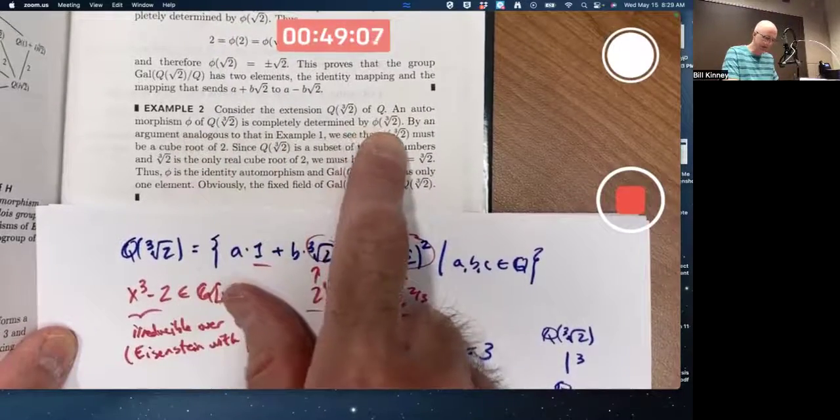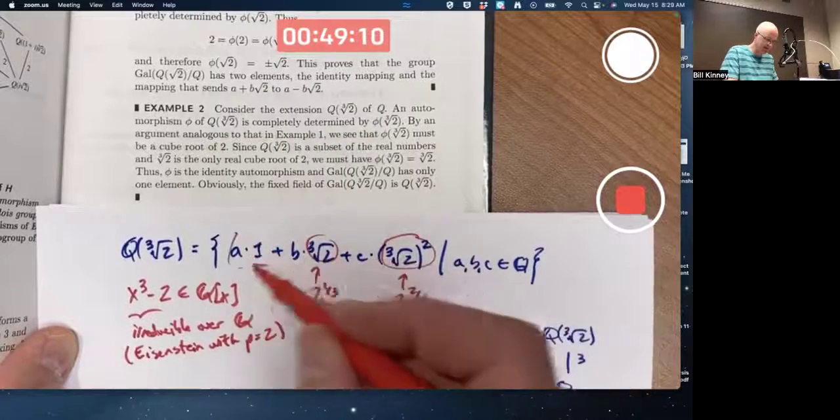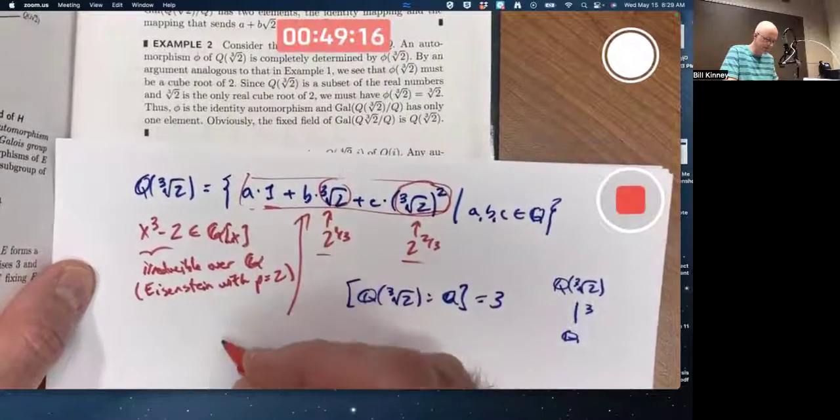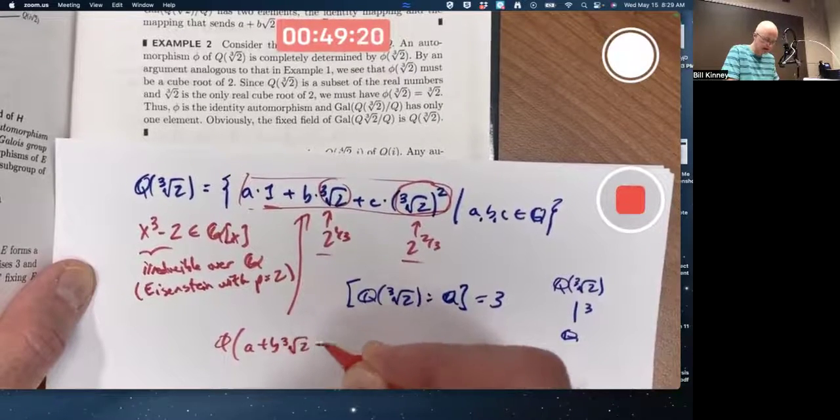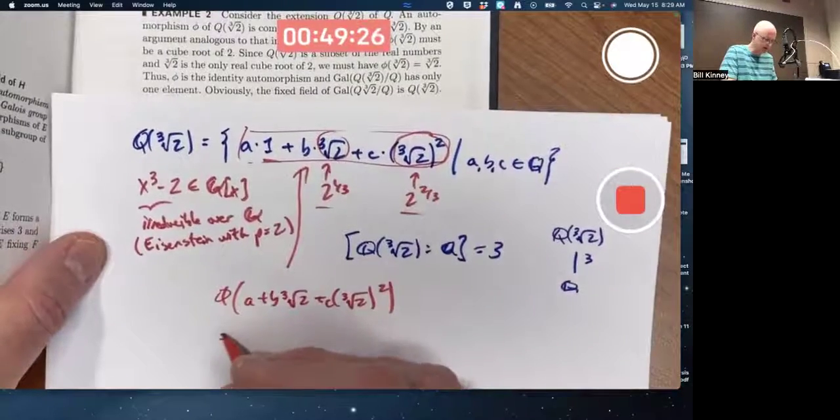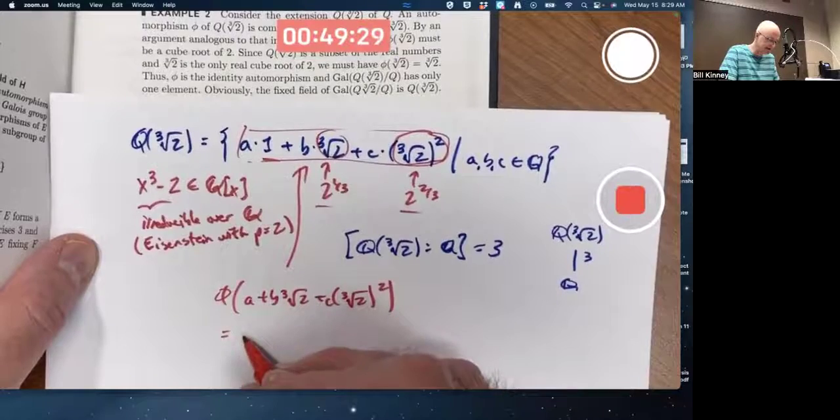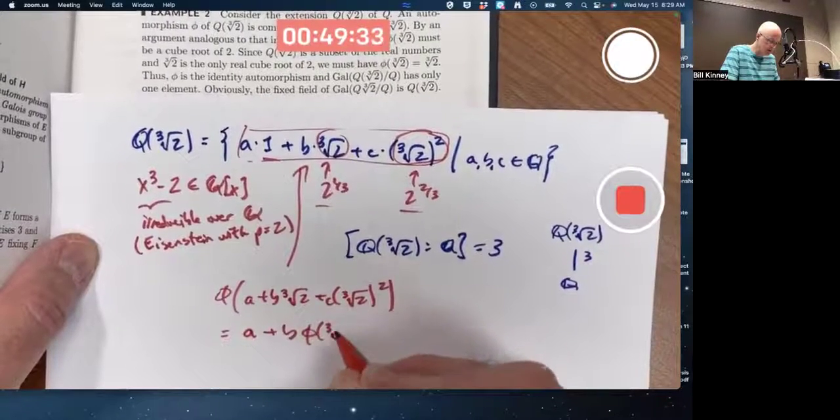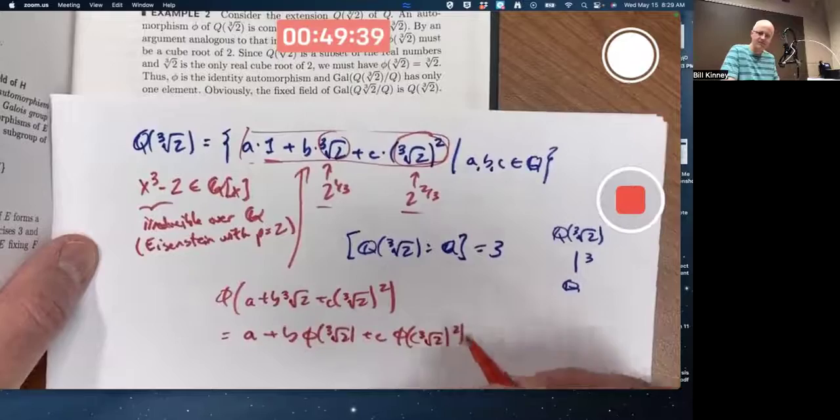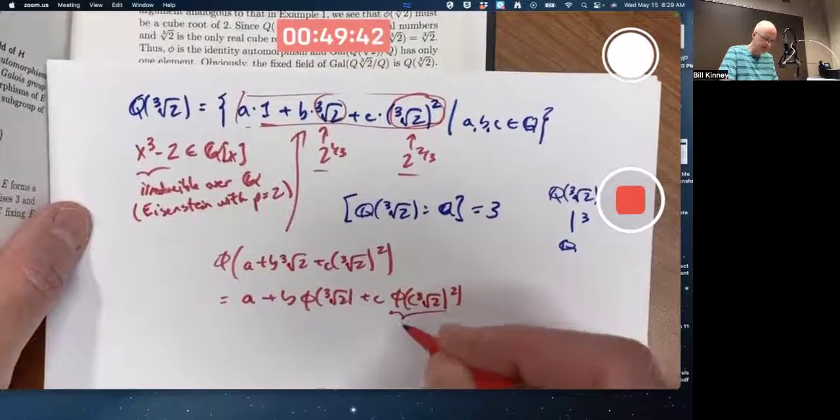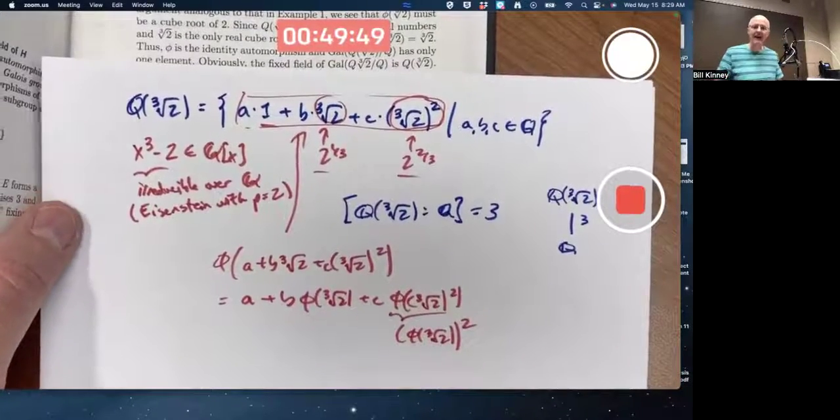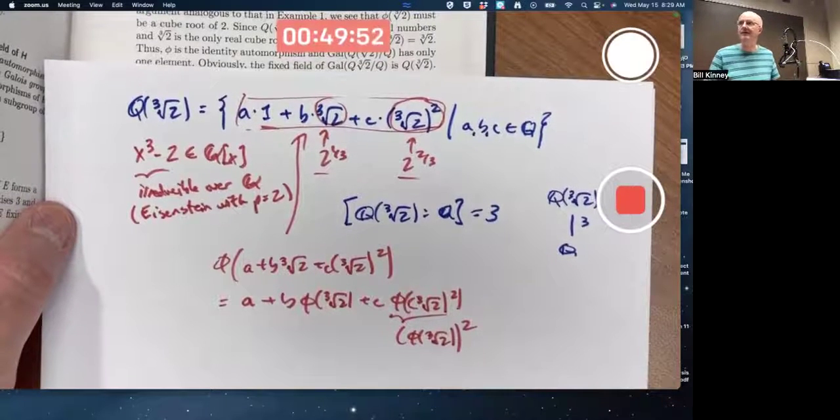Why is it completely determined by phi of cube root of 2? Because you apply phi to an arbitrary such linear combination like this, using the fact that phi is operation preserving and that it preserves all the rationals, this would become a plus b phi of cube root of 2 plus c phi of cube root of 2 squared. That's why phi is completely determined by phi of cube root of 2.